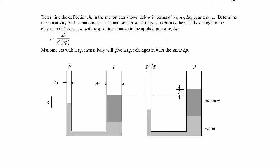In this example we have a U-tube manometer, but the arms have different areas. This area over here is A1, a little bit smaller than the area over here, A2. The fluids in the manometer include water, which is this light gray, and mercury, which is the dark gray.